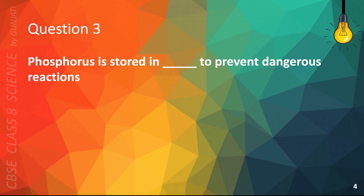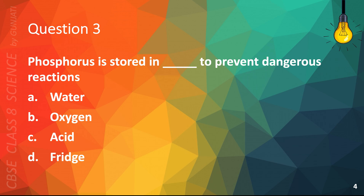Question 3: Phosphorus is stored in blank to prevent dangerous reactions — A. Water, B. Oxygen, C. Acid, or D. Fridge. The correct answer is A. Water.